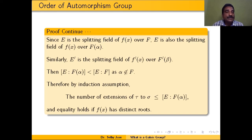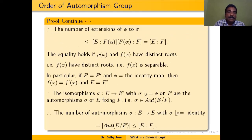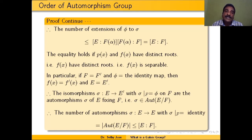So we can apply the induction hypothesis to the extension E over F(α). By the induction assumption, the number of extensions from τ to σ — where τ maps F(α) to F'(β) and σ maps E to E' — is less than or equal to [E:F(α)], with equality if f(x) is separable.